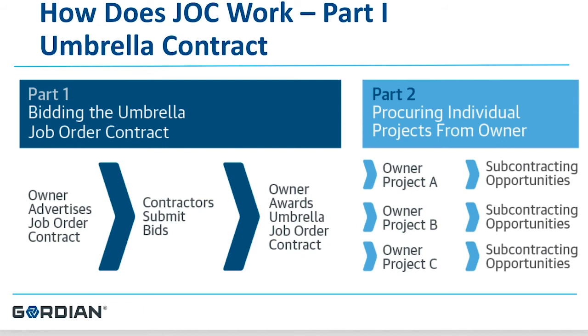They are able to assemble their proposal in the construction task catalog, multiplied by the proper quantity for the item, multiplied by their competitively bid adjustment factor. Supplemental job orders are priced the same way along with each individual job order thereafter. Individual projects will always go through the same process.